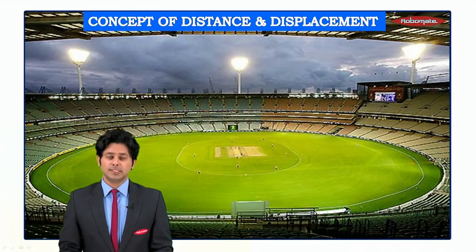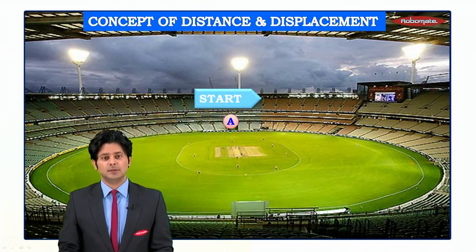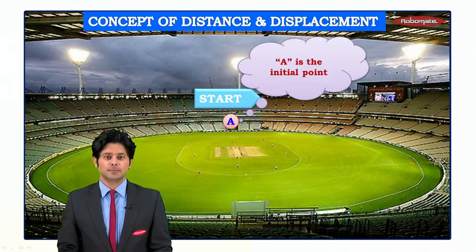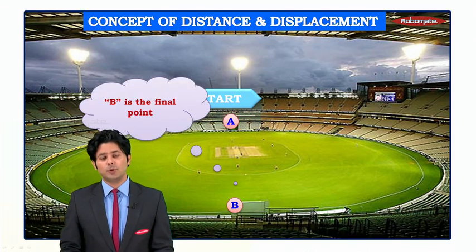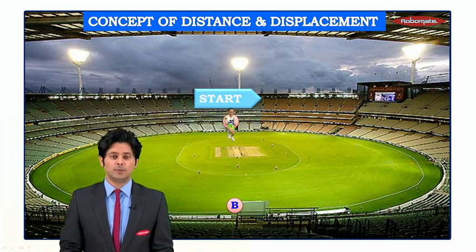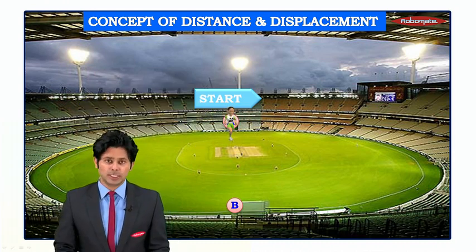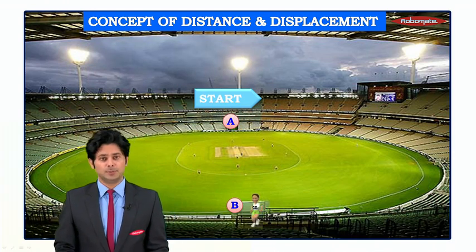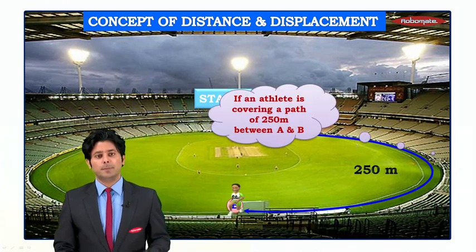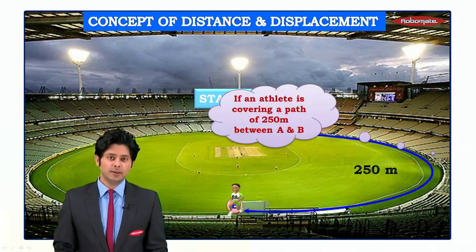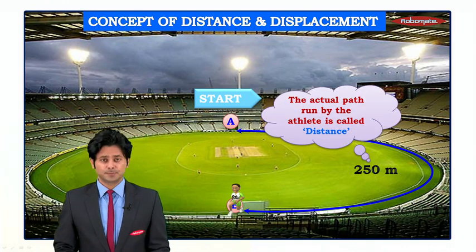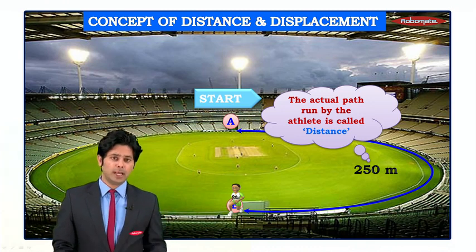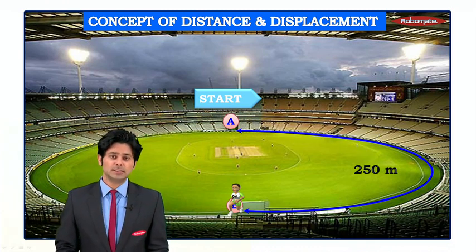Let's take an example. This is point A, which is the initial point, and point B, which is exactly opposite to point A, is the final point. Consider an athlete at point A who starts running across the track and reaches point B. The actual path covered by an object from one point to another is said to be its distance.